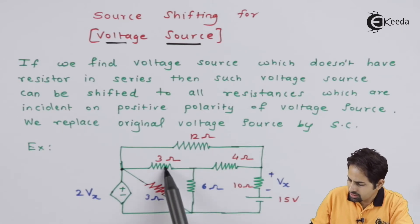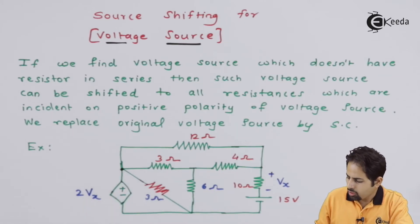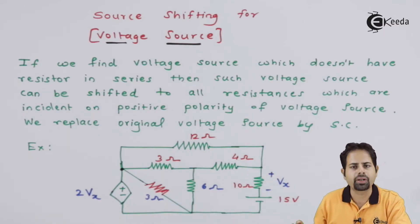So they are this 3 ohm, this another 3 ohm and this 12 ohm. So for this node what we will do, we will give this voltage to all these 3 resistances separately.